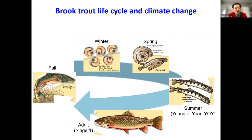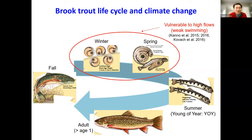Brook trout are fall spawners, and their eggs incubate in the stream bed until they hatch in early spring. They grow to young-of-year, or YOY, in summer when many agencies conduct their fieldwork. Brook trout are short-lived with a lifespan of two to four years. Their early life stages are vulnerable to higher flows due to their weak swimming abilities. Floods or high winter and spring flows typically result in low young-of-year abundance in that summer.